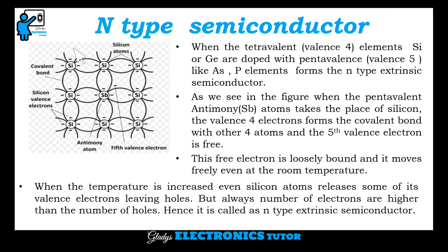So we will see about the N-type semiconductor. When the tetravalent, that is valence-4 elements like silicon or germanium, are doped with pentavalent, that is valence-5 elements like arsenic or phosphorus, it forms the N-type extrinsic semiconductor. As we see in the figure, when the pentavalent antimony atom takes the place of silicon, the 4 valence electrons form covalent bonds with the other 4 atoms, and the fifth valence electron is free.